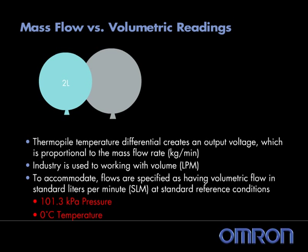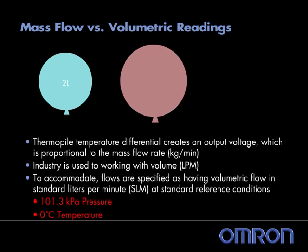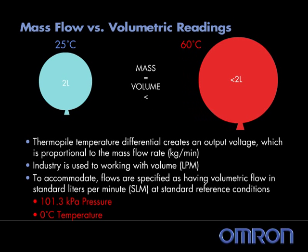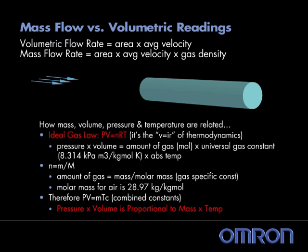While these are mass flow sensors, the OMRON data sheets show flow ranges in liters per minute, a volumetric unit. Because the industry is more familiar with sizing flow sensors volumetrically, the mass flow ratings have been converted to volumetric flows at standard conditions.